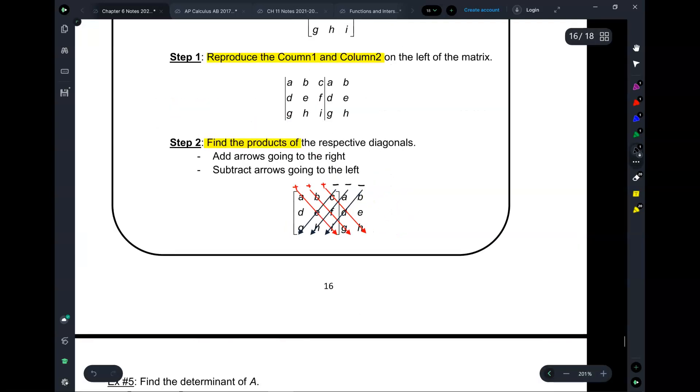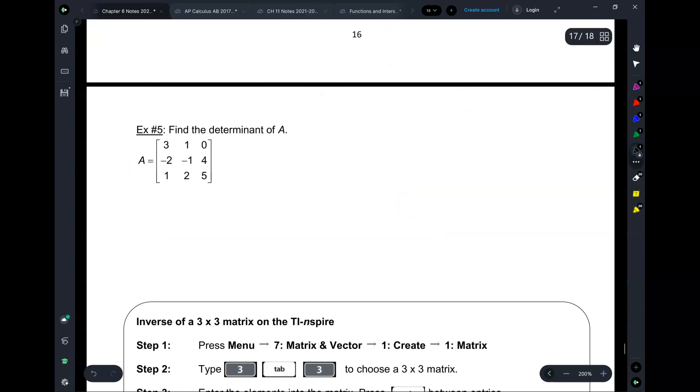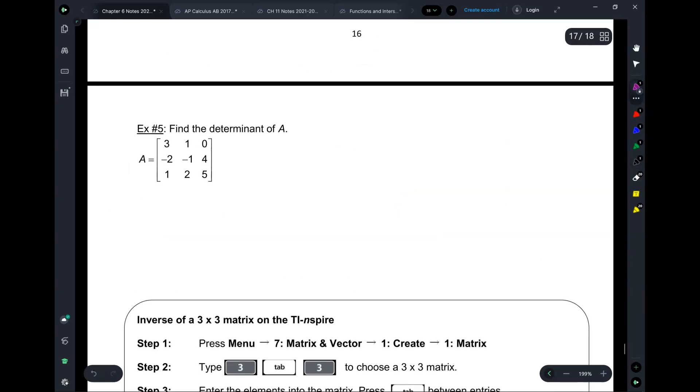And then we draw diagonals going in the opposite direction. Multiply these, multiply these, multiply these. You're going to get three additional numbers and then those you subtract. And that's it. Let's just do one and you guys will see. So we're going to find the determinant of A. Reproduce the two columns here.